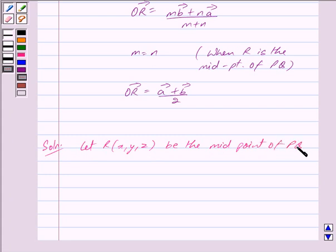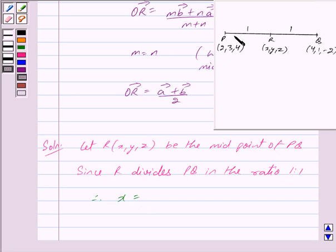Since R divides PQ in the ratio 1 is to 1, we have x equals (2 + 4)/(1 + 1).